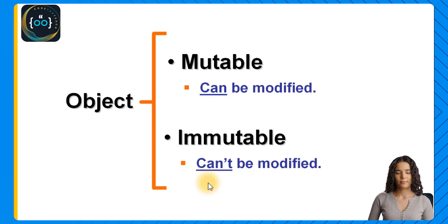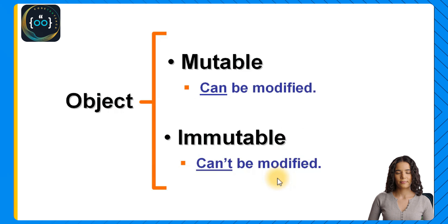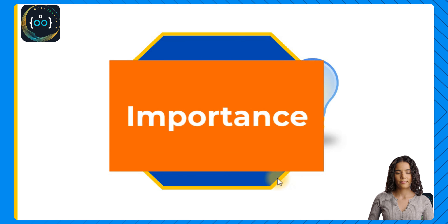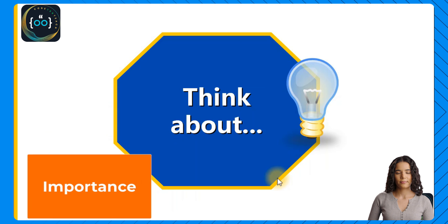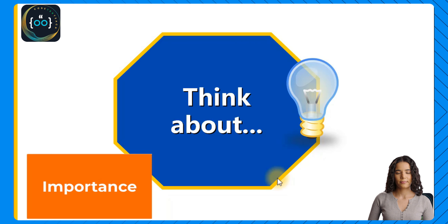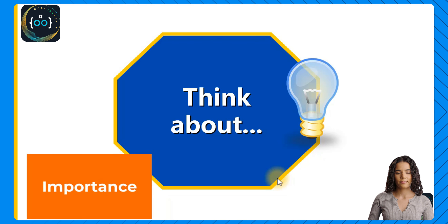An object can be classified as either mutable or immutable. Mutable means that it can be modified and immutable means that it cannot be modified. Please take a moment to think about the importance of choosing the correct data type — mutable or immutable — and why it is important to choose a mutable data type for certain situations and immutable for others. Also think about the risks of choosing the wrong data type. Think about this and when you're ready, go to the next video.